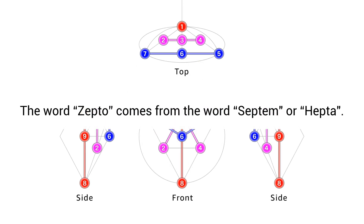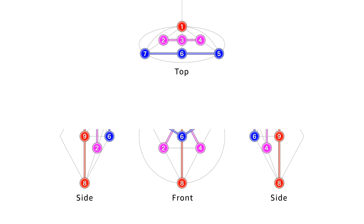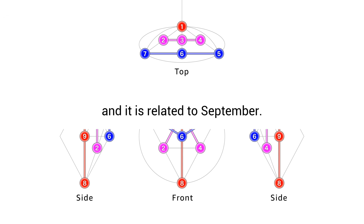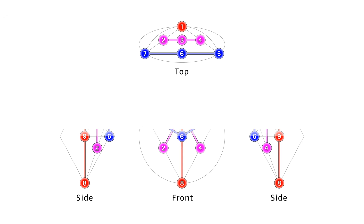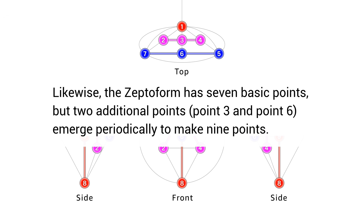The word 'zepto' comes from the word 'septem' or 'hepta'. The former is Latin and the latter is Greek. Septem or hepta means seven, and it is related to September. September was originally the seventh month, but it was changed to the ninth month.